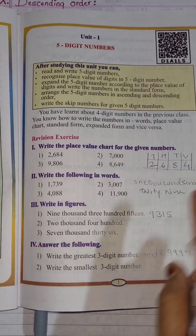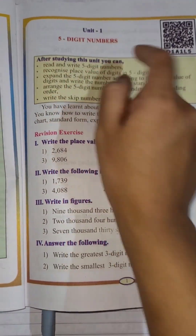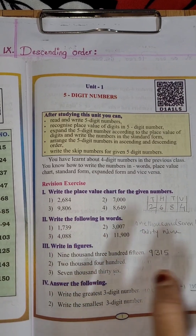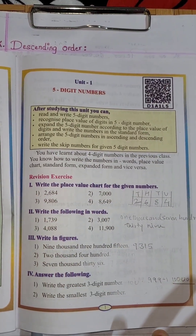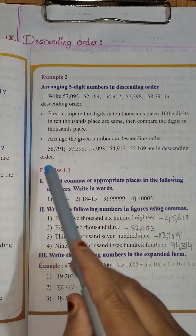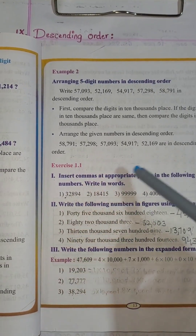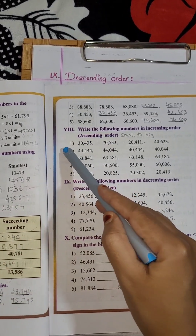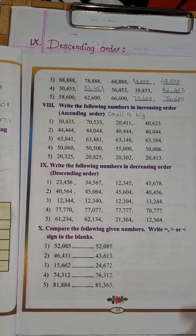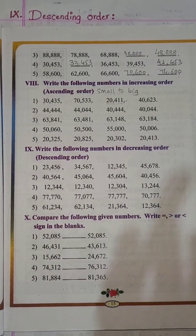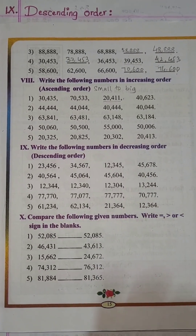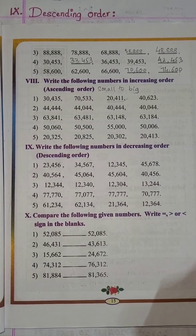Open page number 1. Here it is page number 1, unit 1, 5-digit numbers. So already we have completed the revision exercise. Then exercise 1.1 — in that we have completed 1st, 2nd, 3rd, 4th, 5th, 6th, 7th, and 8th main. If you have not seen those videos, don't worry. We will get all those video links in my description box, so just do check it out.